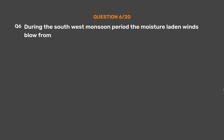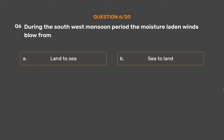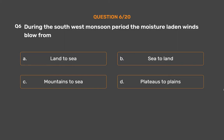Question No. 6: During the southwest monsoon period, the moisture-laden winds blow from — Option A: Land to sea, Option B: Sea to land, Option C: Mountains to sea, Option D: Plateaus to plains.